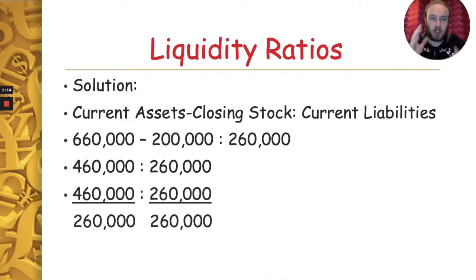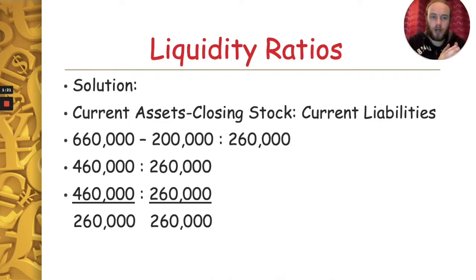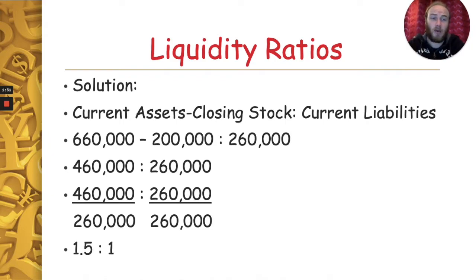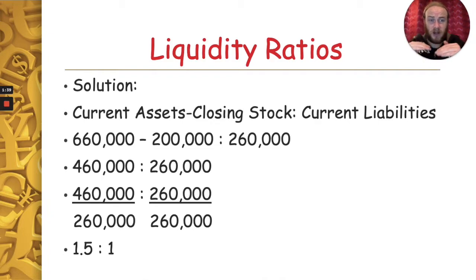Now we want to get the 260,000 down to one, because with all our ratios it's always a figure is to one. So we divide both sides by the right-hand side number, which in this case is 260. Dividing both sides by 260 gives us 1.5 is to one as the answer for our ratio. So we put our figures into the formula and divide to make sure it's expressed as a figure is to one.